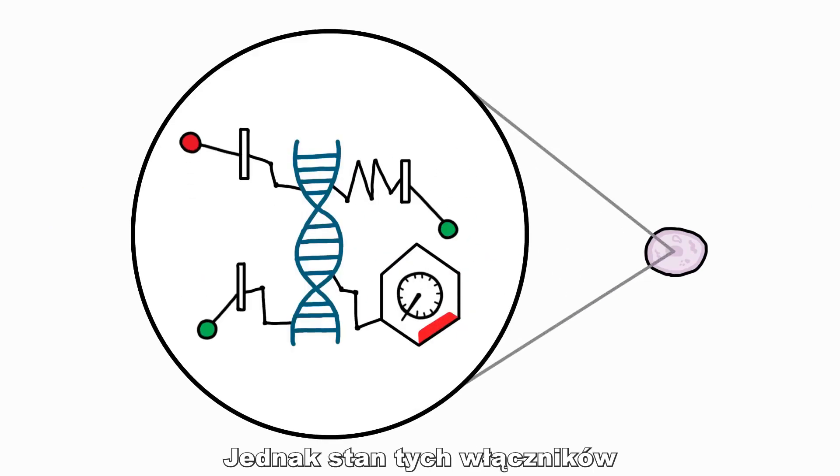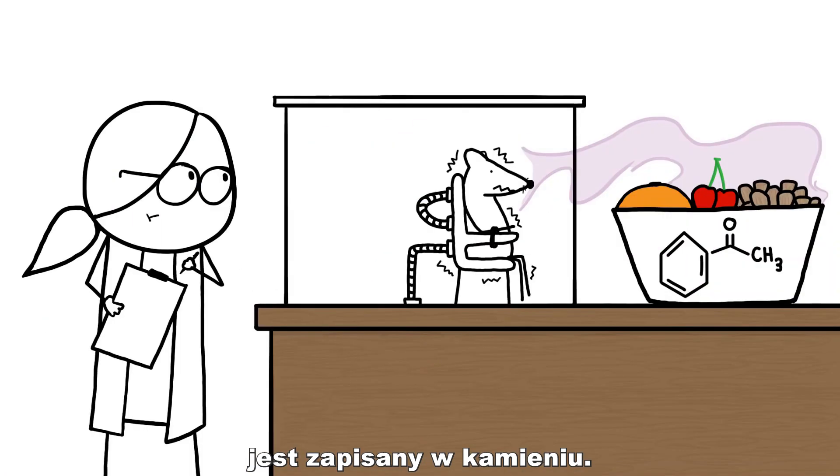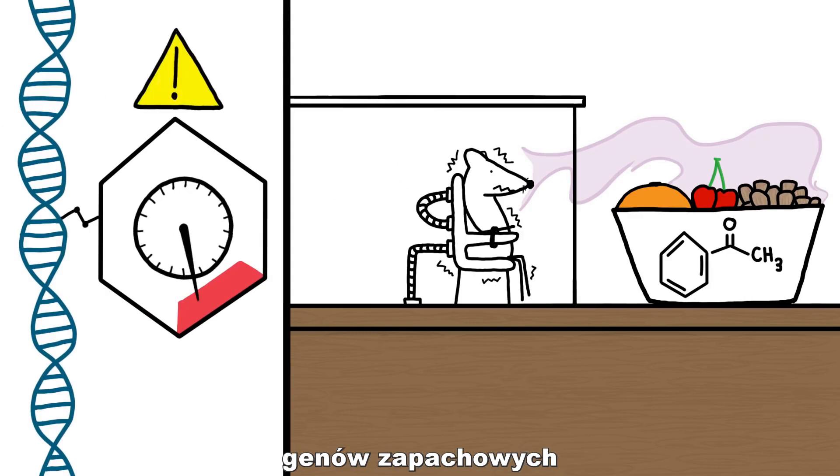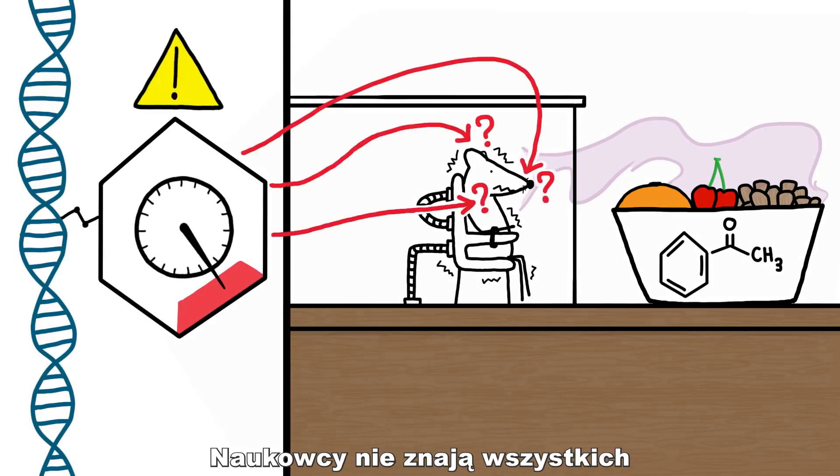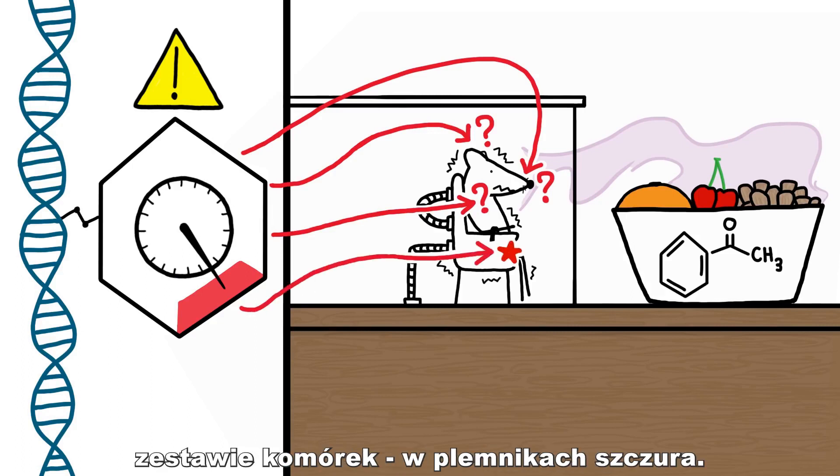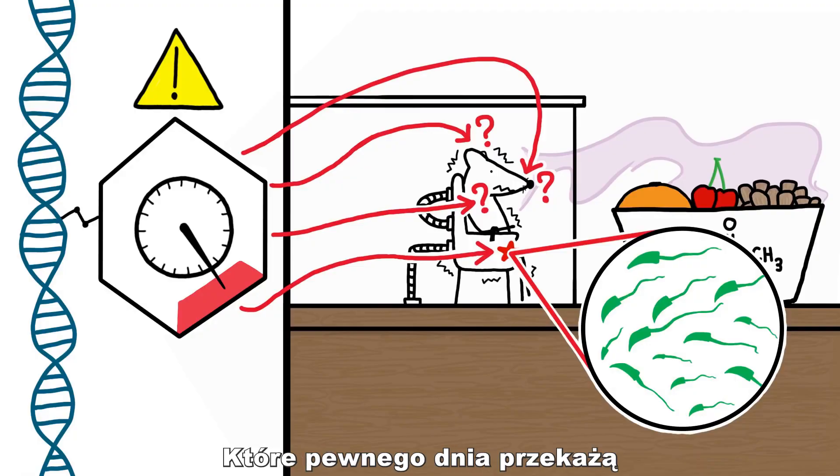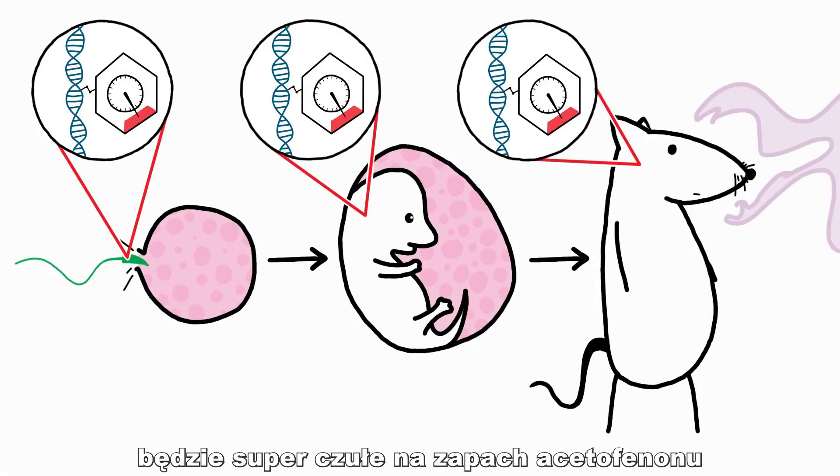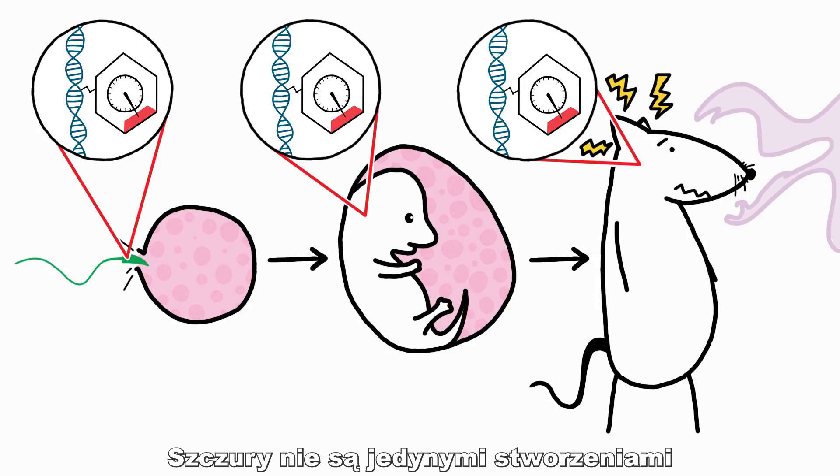But the switches in any one cell aren't set in stone. Teaching those rats to fear the fruity smell switched one of their smell-sensing genes into overdrive. Researchers don't know all the places in the rats' bodies where this switch got flipped, but they know it happened in one key set of cells, the rats' sperm cells, which would one day pass along the tweaked genetic material, making the next generation of rats super-sensitive to acetophenone.